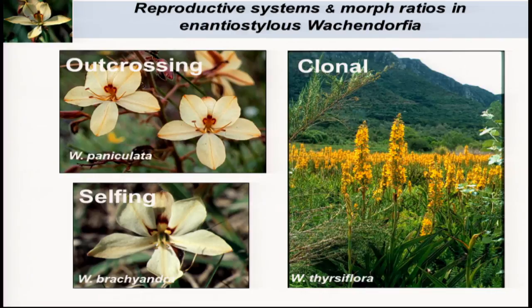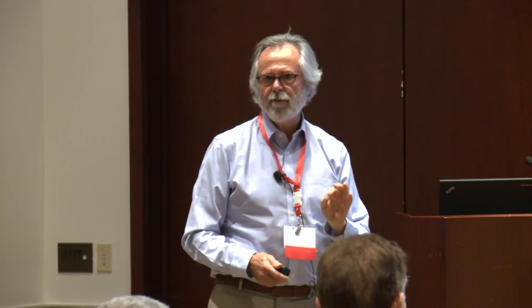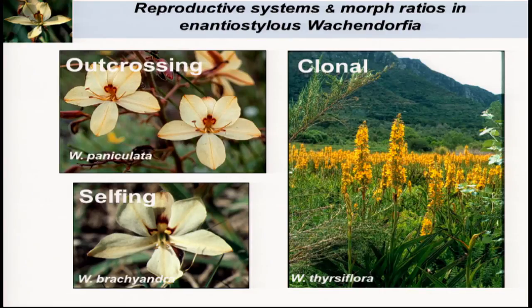The last example of stylar polymorphisms involves mirror image flowers. I want to show how there is a signature of the reproductive mode on the distribution and frequency of these morphs within populations, which can tell you the kind of reproductive system that operates. I'm going to look at this small clade of about five closely related species, each of which has a different reproductive system. Wachendorfia paniculata is fully sexual with no clonal propagation. One species has had the enantiostylous mechanism break down and evolved selfing. The species Theresa flora is highly clonal.